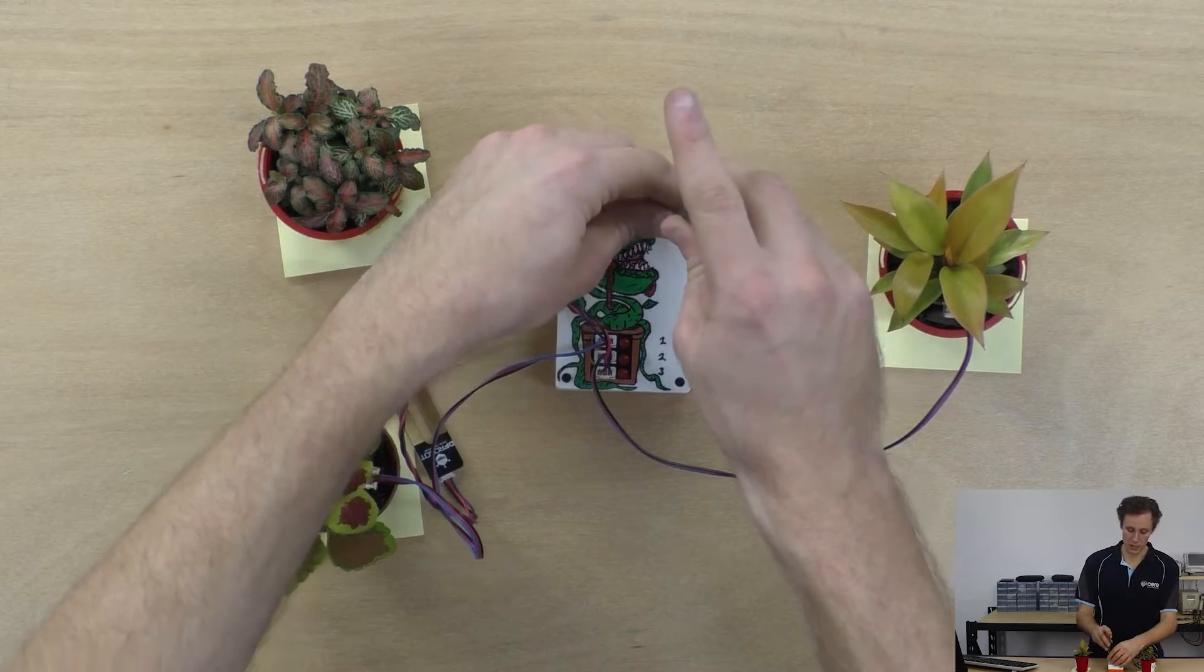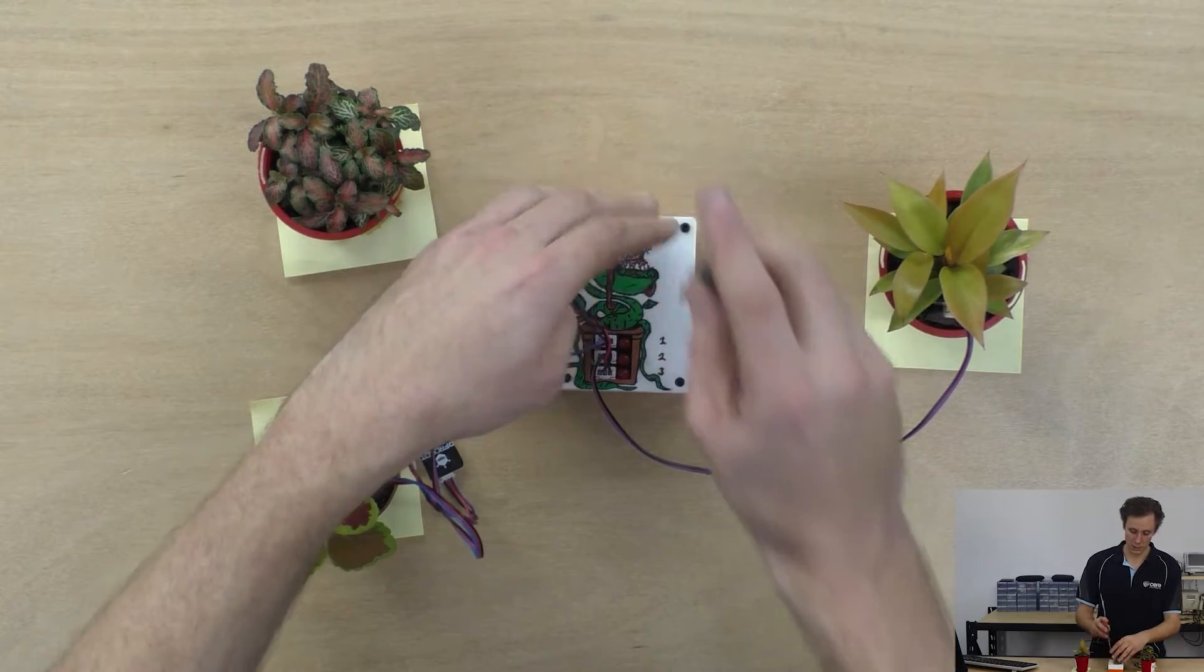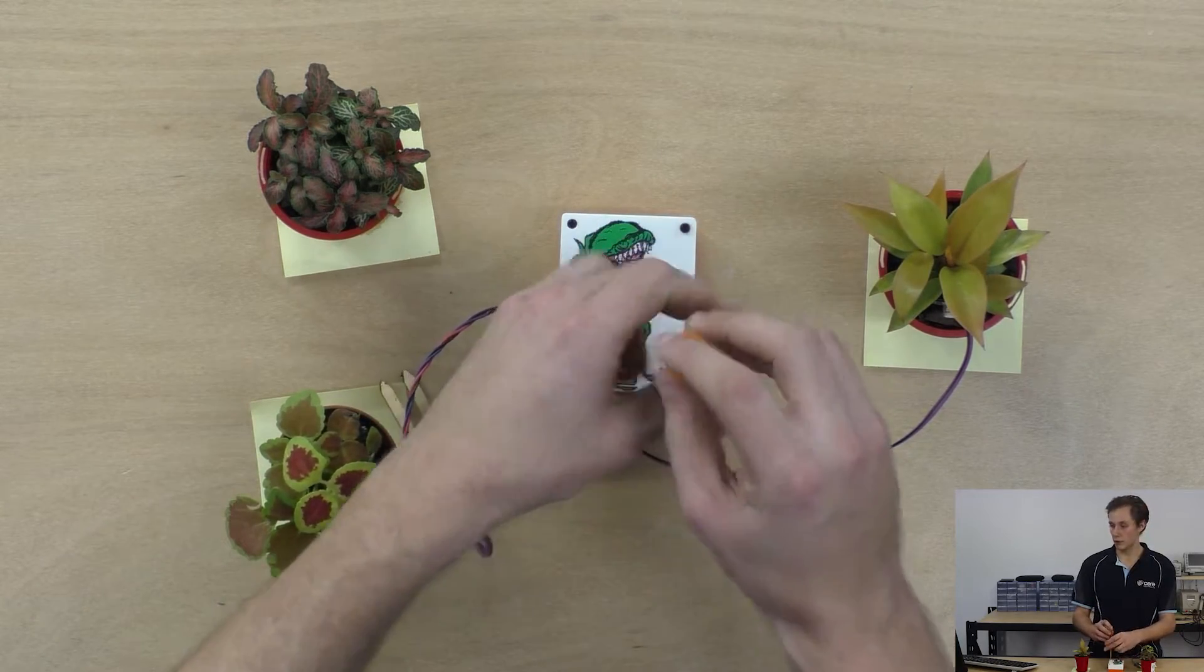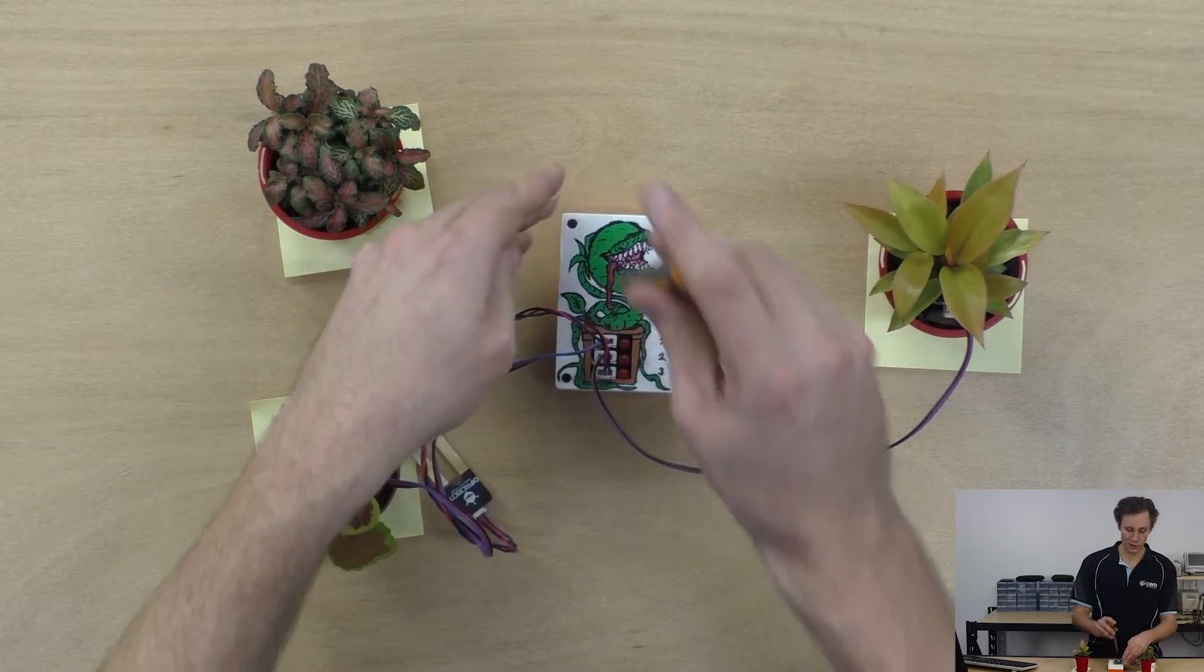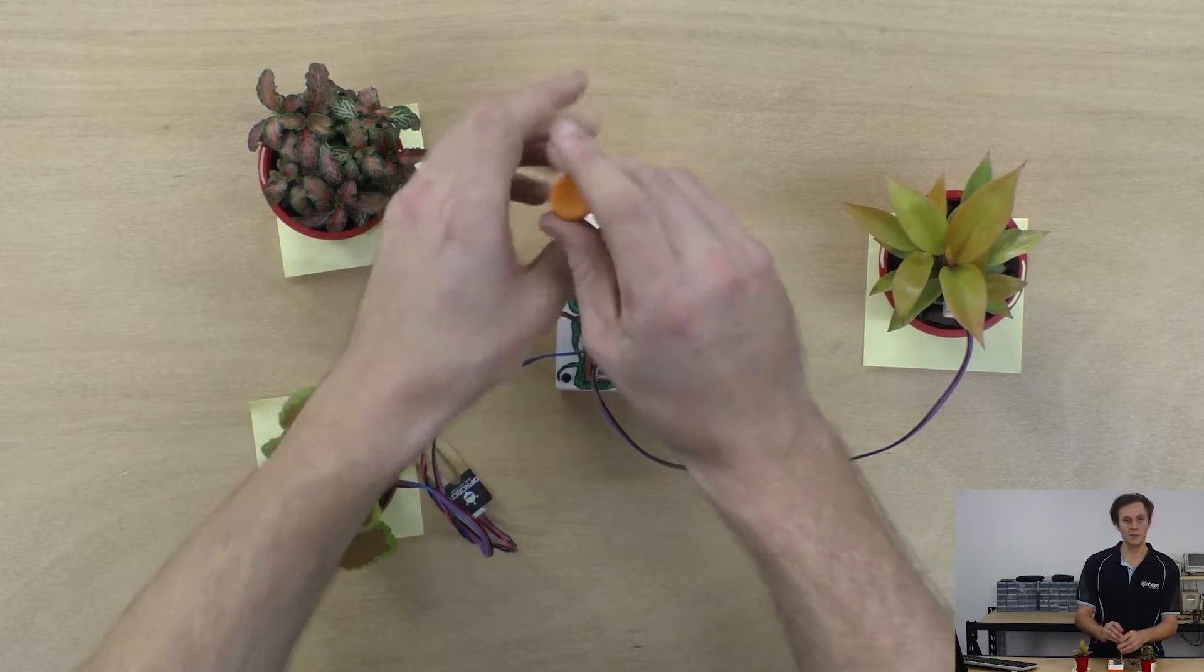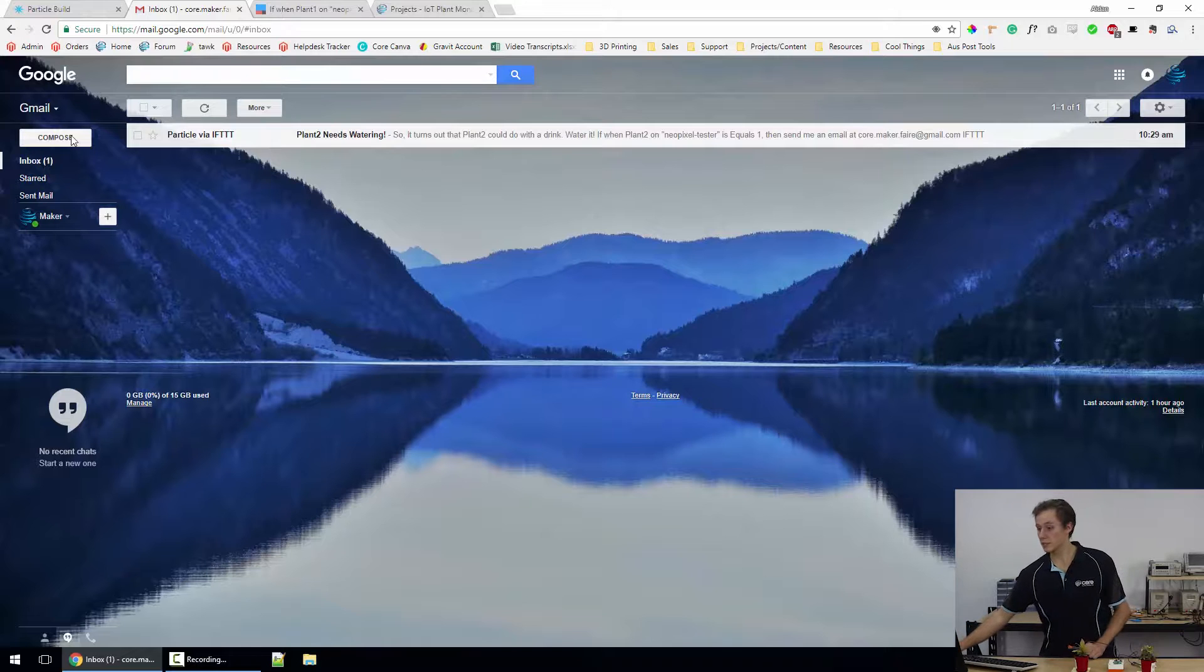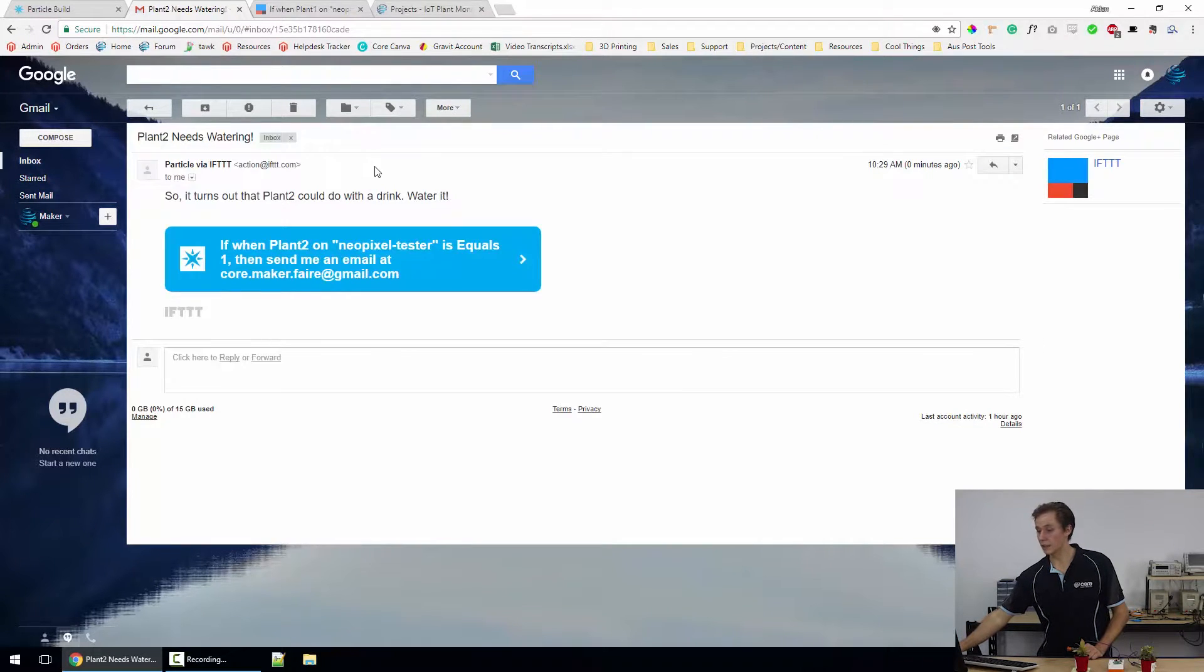So that email will come through in a second but I'm going to take the lid off this guy and we'll take a look at how I built it so you can follow along and build your own. Unfortunately the joys of email service is that they can be a little bit slow so there we go it's come through plant two needs watering that was the previous notification. Of course it's designed for when you're out of the home so you won't be on your email constantly watching it. It gives you a timestamp and if we open up the email it says plant two could do with a drink give it a water.